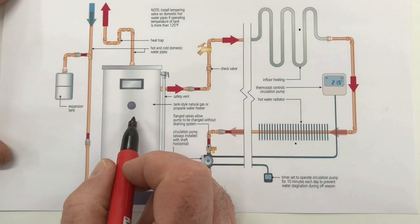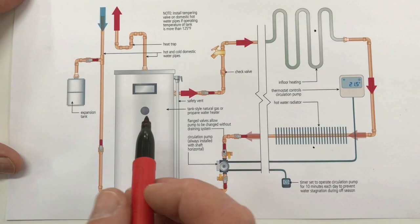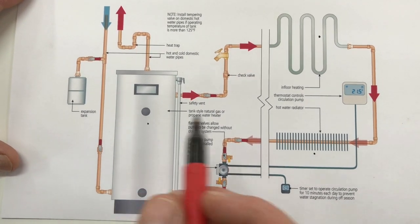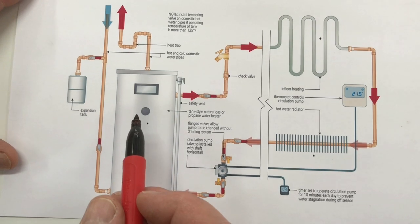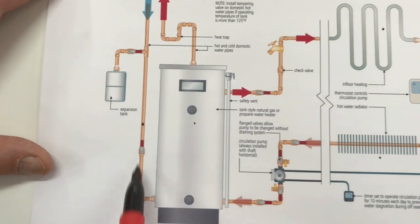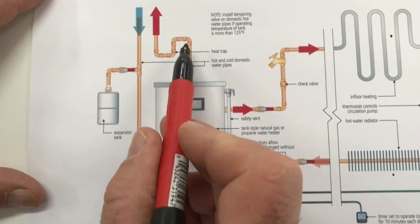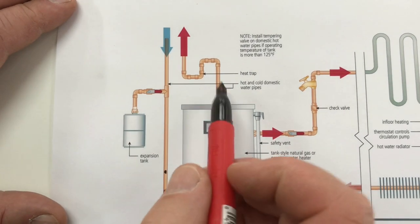So this is the tank style heater. One of the advantages of this approach as opposed to a boiler is that you've automatically got a feed for domestic hot water at taps and fixtures. This line here we've got the cold water coming into the tank and then up here we have the hot water going out to the taps and fixtures.